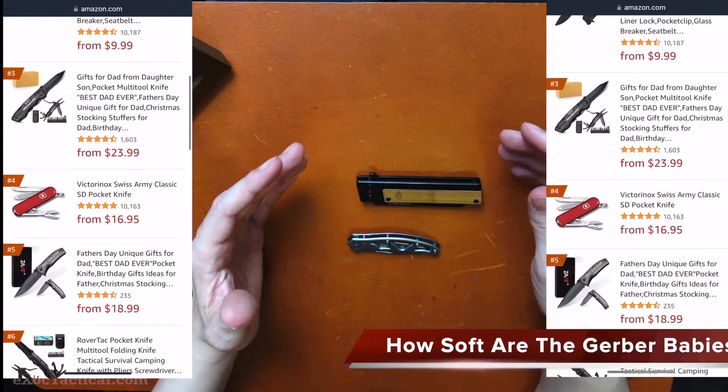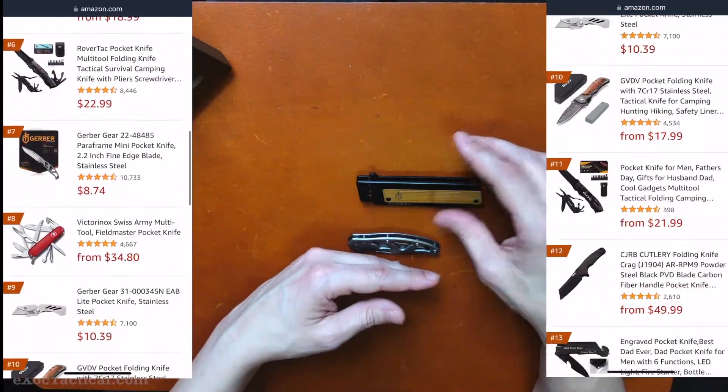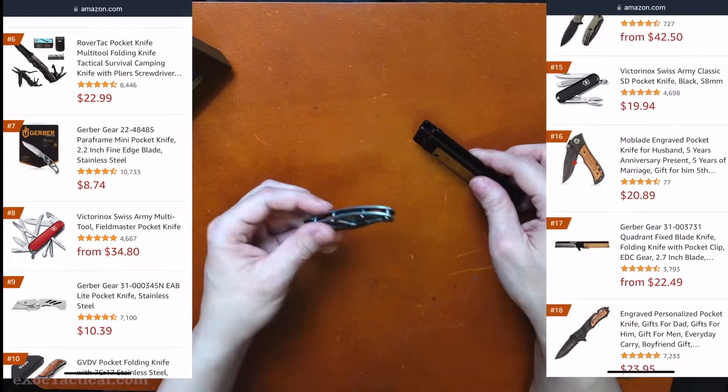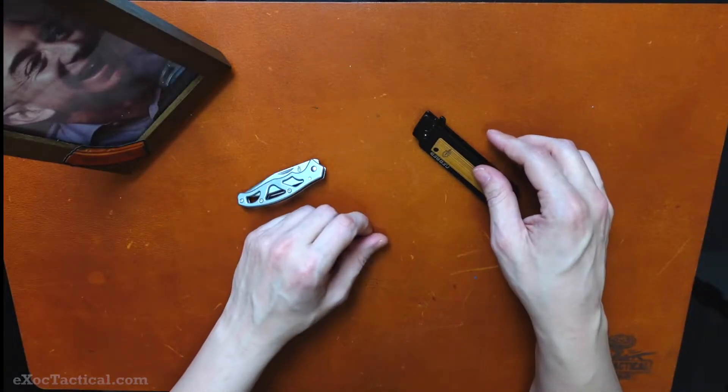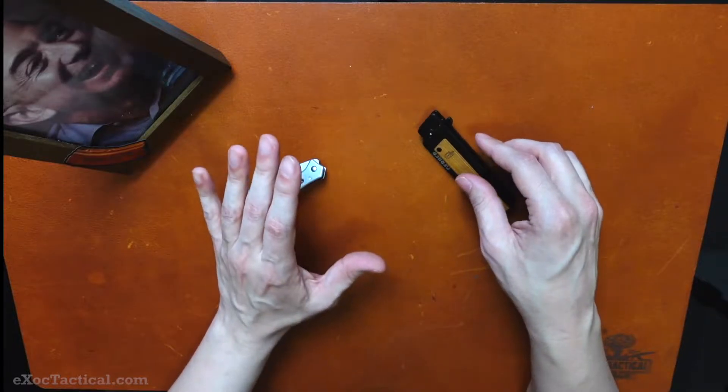Alright, this is from the top 100 pocket knives. These are the Gerbers here: the Gerber Quadrant and a Gerber Mini ParaFrame. These are very popular, sold on Amazon. So I want to do a little quick overview.